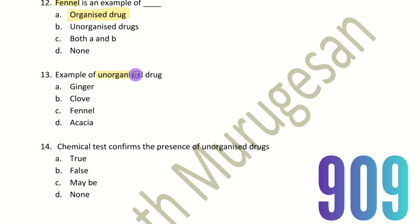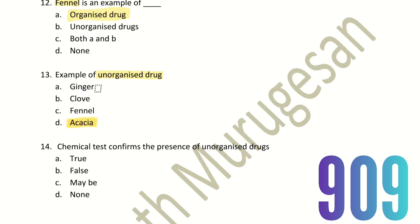Thirteenth question: Example of Unorganized Drugs. The choices are Ginger, Cloud, Fennel, and Acacia. Fennel, Cloud, and Ginger are Organized Drugs because they are particular parts of a plant. But Acacia is an Unorganized Drug because it is a gum — gum has no definite cylinder, sphere, or oval shape, and no definite size. Hence, Acacia is an example of Unorganized Drugs.